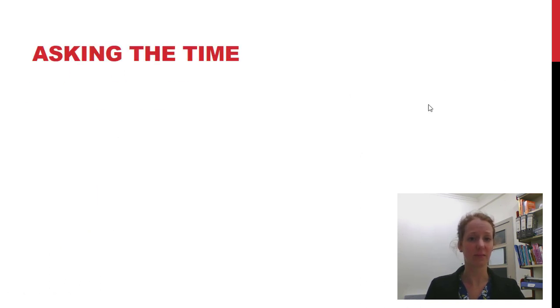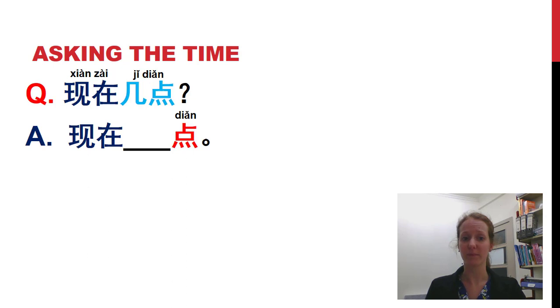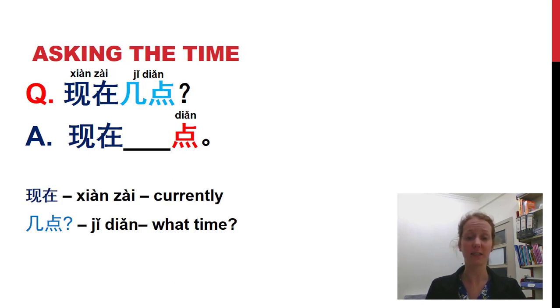Now how do we ask the time? 現在幾點? 現在 means currently or right now. 幾點 is a question word meaning what time? You might have noticed 幾 from 你家有幾口人? How many people in your family? So this 幾 is always replaced with a number. In this case, we're talking about time.